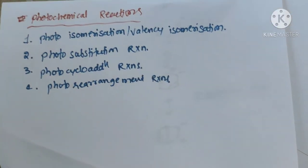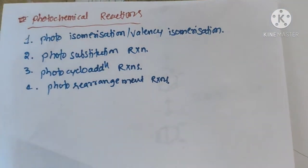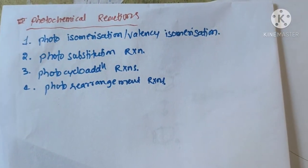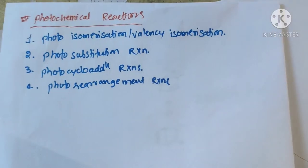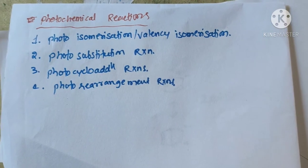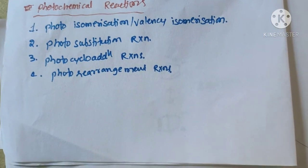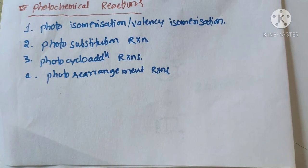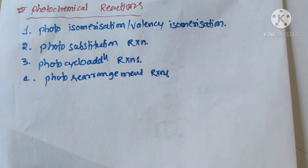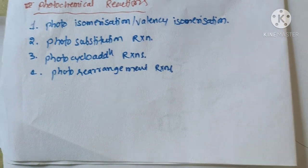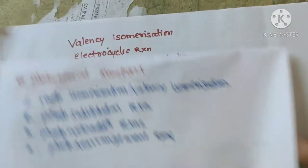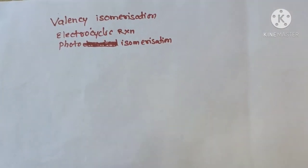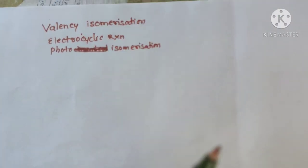Excited aromatic compounds show different types of reactions. The first one is photoisomerization or valence isomerization, also known as the electrocyclic reaction. The second one is photosubstitution reactions. The third is photocycloaddition reactions. And the fourth is photorearrangement reactions. Now we go for the first category — valence isomerization or electrocyclic reaction or photoisomerization.